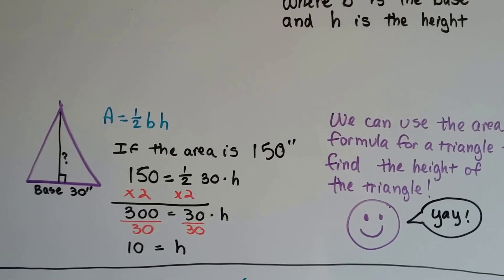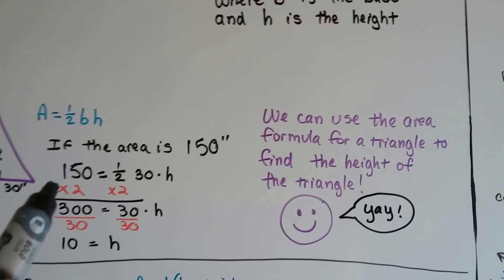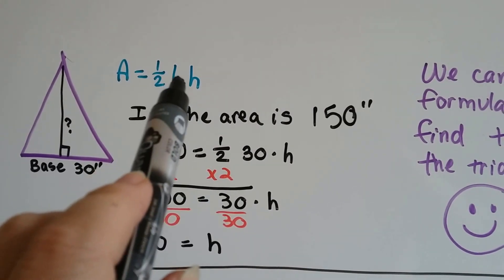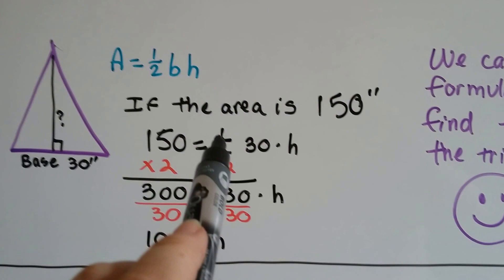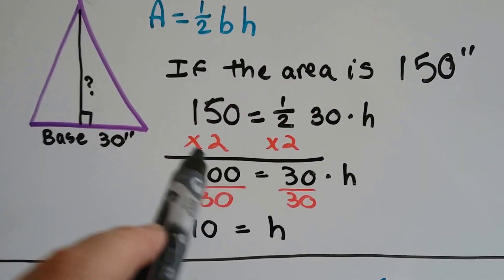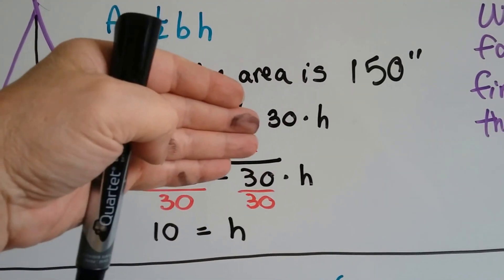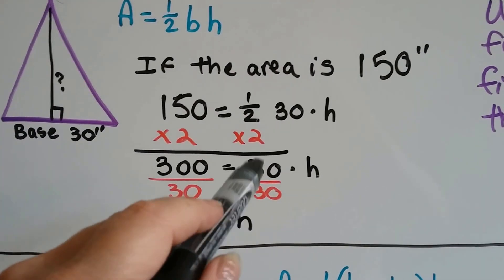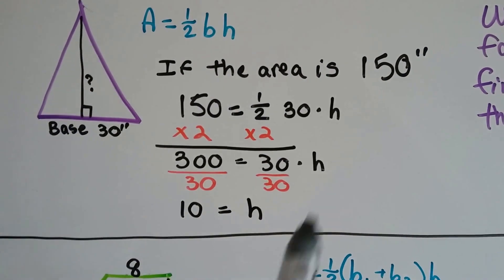We know that the area of this triangle is 150 inches. We also know that the base is 30 inches, but we don't know the height. So we can use the area formula for a triangle to find the height. We plug in 150 as the area, and the formula is half base times height. We know the base is 30, so we've got half times 30 times height. The opposite of a half is to double it, so we multiply both sides by 2 to get rid of the half. The 150 becomes 300, and we've got 300 equals 30 times h. We divide both sides by 30 to get h by itself. 300 divided by 30 is 10, and we know that the height is 10.